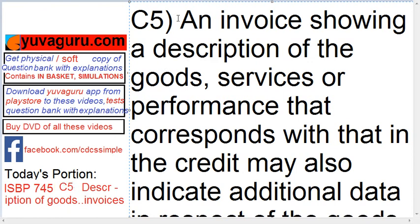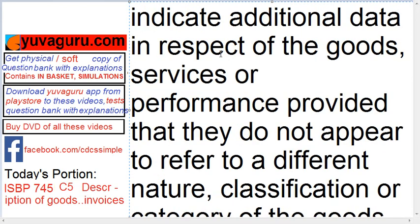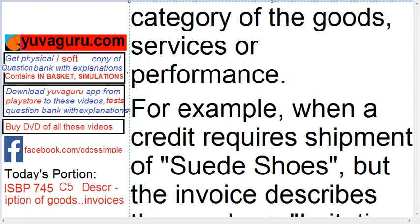C5: an invoice showing a description of goods, services or performance that corresponds with that in the credit may also indicate additional data in respect of the goods, services or performance, provided that they do not appear to refer to a different nature, classification or category of goods, services or performance.